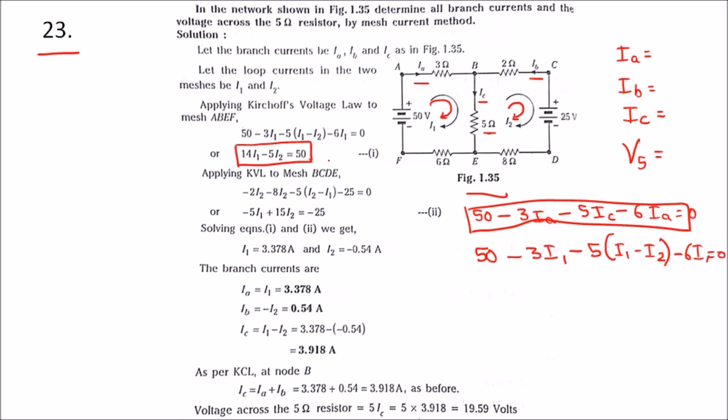Once we simplify, we get equation one. For mesh BCDB, we apply Kirchhoff's Voltage Law with loop current I2. We get -2I2 - 8I2 - 5(I2 - I1) - 25 = 0. Simplifying gives equation two.